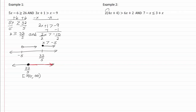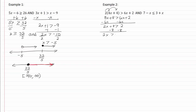Now let's go to example two. First thing we want to do is distribute. We've got eight x plus eight is greater than six x plus two. Let's get our x's on one side. So now we have two x plus eight is greater than two. We'll subtract eight from both sides. Now I've got two x is greater than negative six. Divide by two and that means x is greater than negative three.